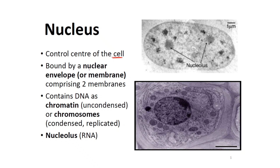The nucleus is bound with a nuclear envelope, also called the nuclear membrane, which comprises two membranes. It contains DNA as chromatin, which is uncondensed, or chromosomes, which are condensed or replicated.